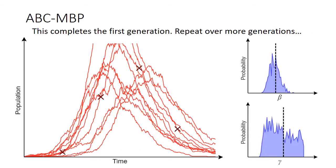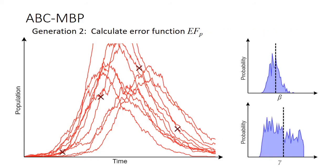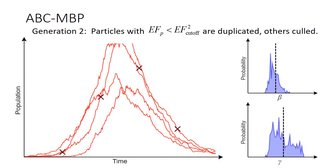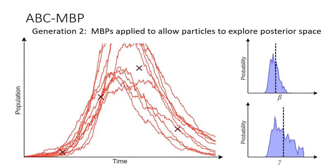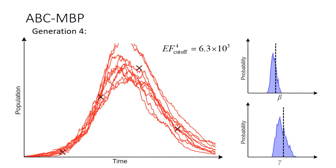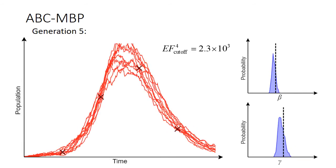That completes the first generation. The same basic procedure is repeated over subsequent generations. So for example, in the second generation, we again calculate the error function, select half of the particles which lie closer to the data, duplicate those and cull the rest, and then again apply model-based proposal transitions. We find that in the second generation, the parameter posterior approximations on the right-hand side have markedly improved compared with the first generation. This gets more and more accurate through the subsequent generations — generation 3, generation 4, and final generation 5 — which shows accurate posterior parameter distributions on the right, and states which fit the data well on the left.